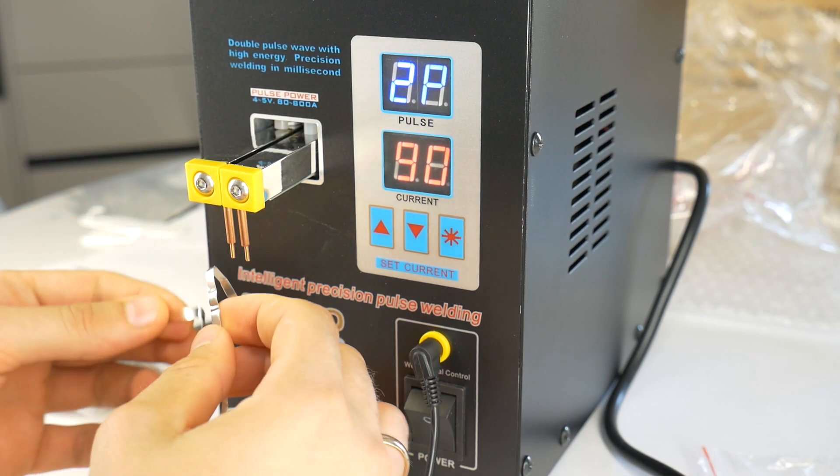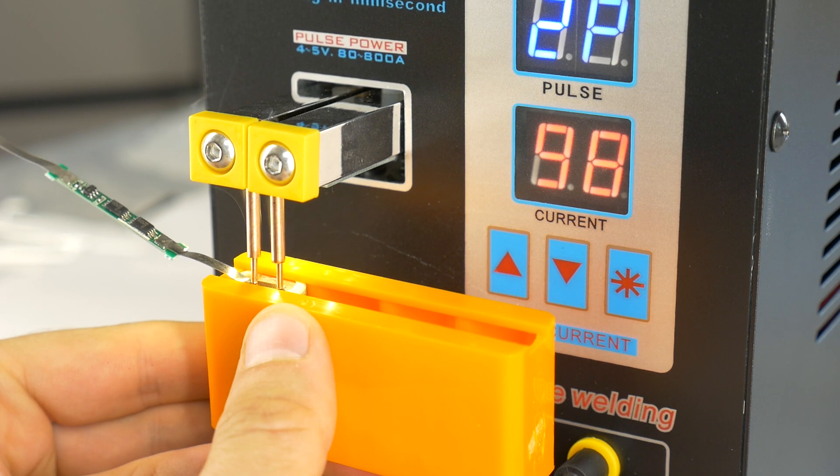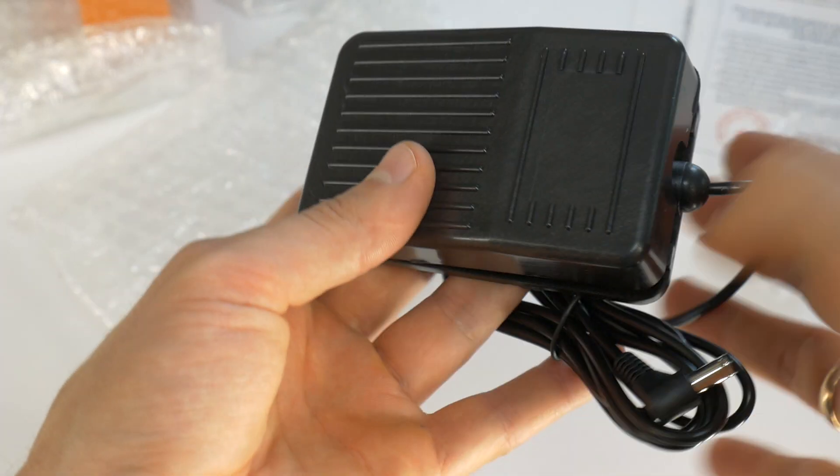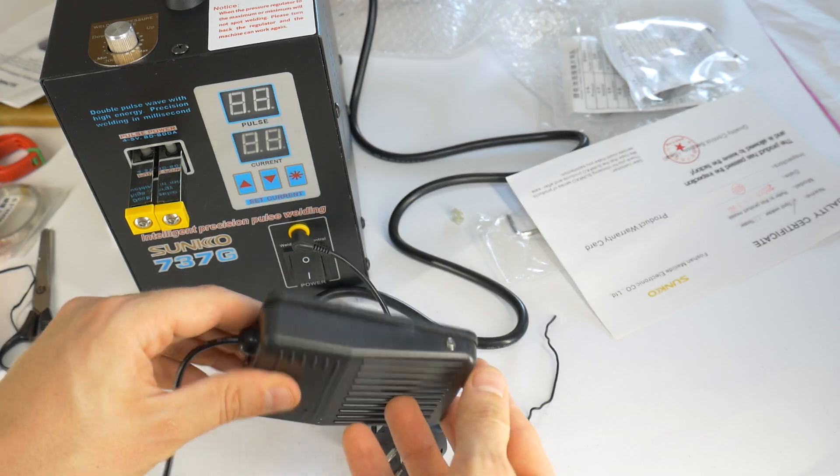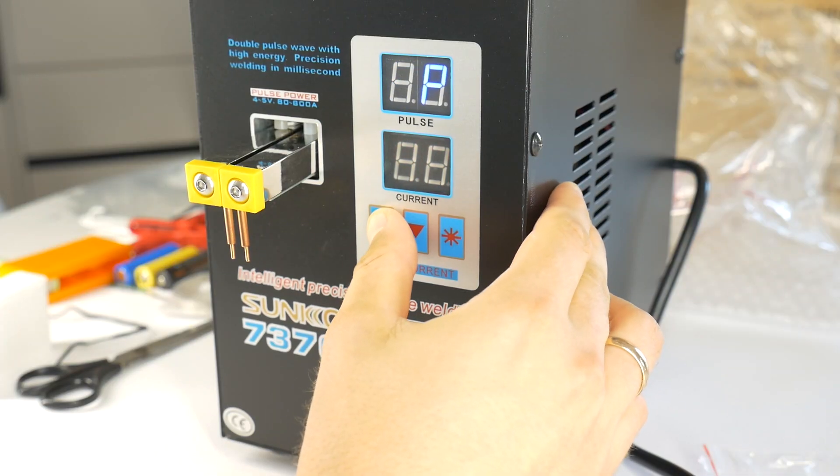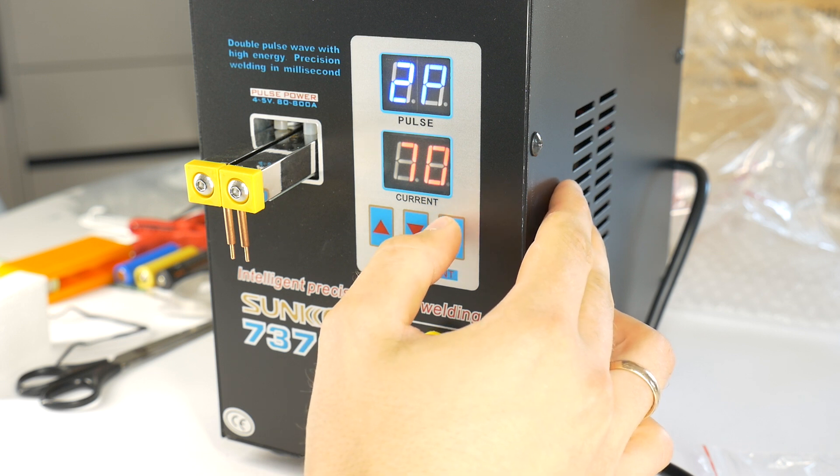The device is very easy to use because it has a foot switch. After some tests, you just need to find the right power level and pulse count, which is either one or two.